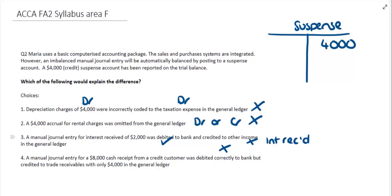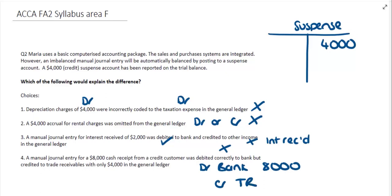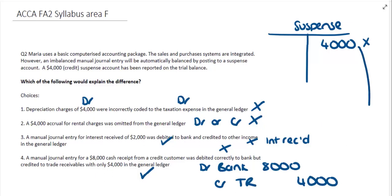That leaves us with the last option: a manual journal entry for an $8,000 cash receipt from a credit customer was debited correctly to bank but credited to trade receivables with only $4,000. So we have a debit to bank of $8,000 and a credit to trade receivables of $4,000 — our debit side is bigger than our credit side. This matches perfectly: the $4,000 credit sitting on the suspense account is the other $4,000 that should have been posted, making choice four the correct answer.